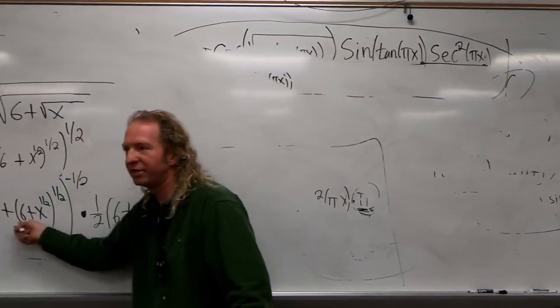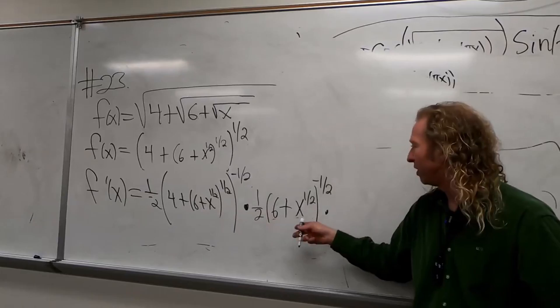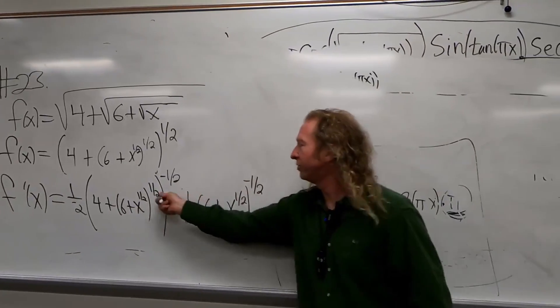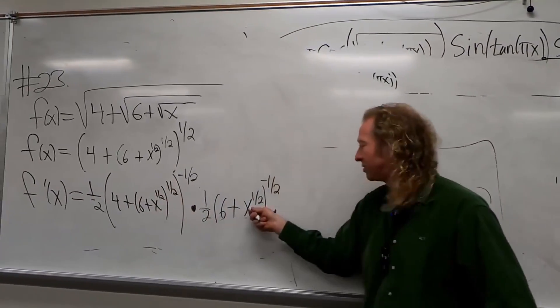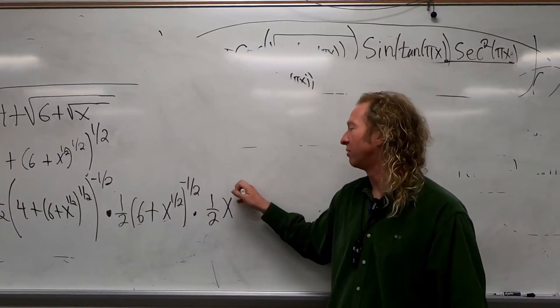So when you're taking this derivative, you do this, subtract one, now it's the derivative of this, right? So one-half x to the negative one-half.